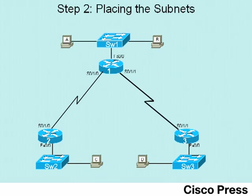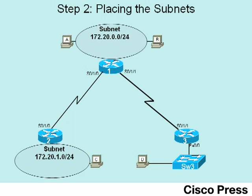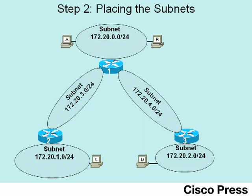Earlier in this lab I showed how we need five subnet numbers to support this internetwork, and the network manager dictated that we should use the five lowest numeric subnet numbers. For the top LAN I chose 172.20.0.0, the zero subnet. The LAN on the bottom left gets the 172.20.1.0 subnet, and the LAN on the bottom right gets 172.20.2.0. For the two WAN links, I chose 172.20.3.0 for the left-hand serial link and 172.20.4.0 for the right-hand serial link.